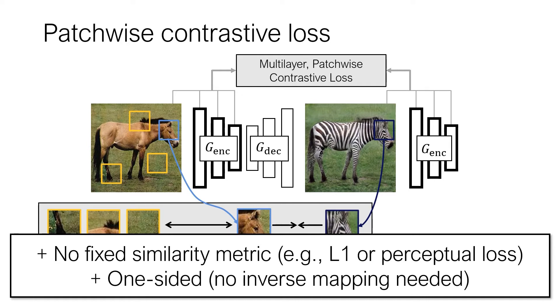This will be helpful when an image translation model is trained jointly with other models in a larger context, such as domain adaptation or sim-to-real in robotics tasks.